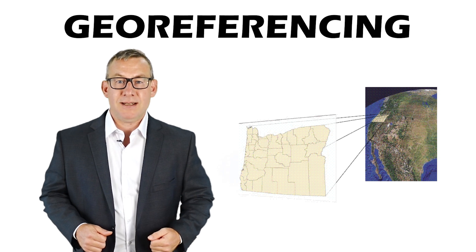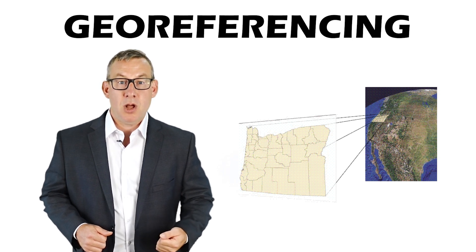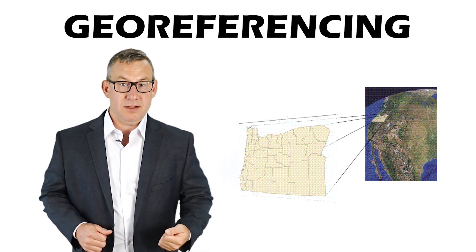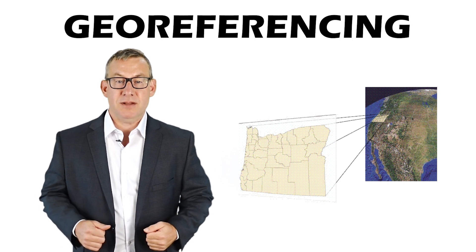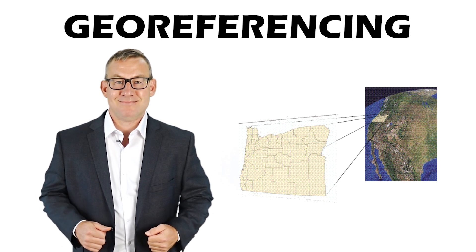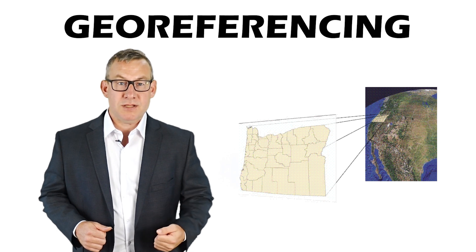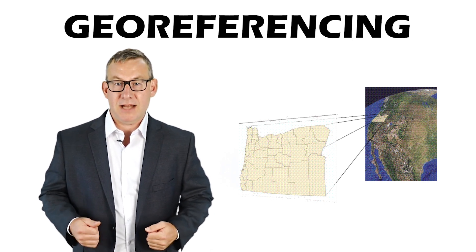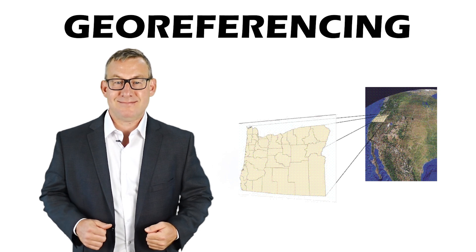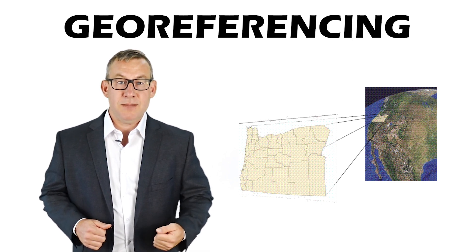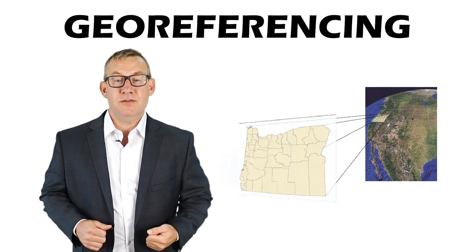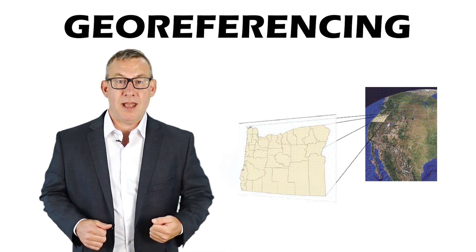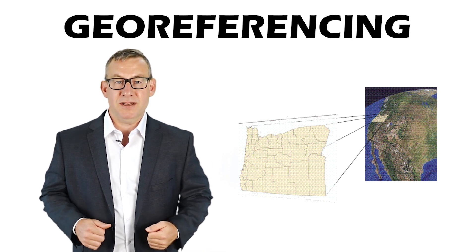Geo-referencing is associating a map without spatial information with spatial information. Geo-referencing can only be done with a projected coordinate system on a flat plane. Unreferenced images in need of geo-referencing are often scanned maps and aerial photography.